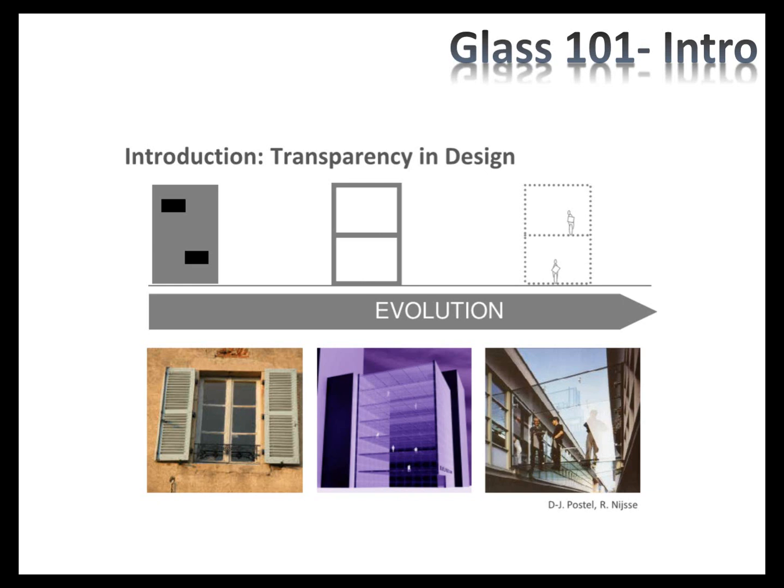There has been quite a bit of evolution in glass as a material used in buildings over many hundreds of years, from when it was used mainly in small window applications to today, where glass is used well beyond windows and can provide full transparency. There is also another evolution currently happening in regards to sustainability — whether we should have fully transparent facades, both in terms of operational energy requirements and the amount of embodied carbon that goes into creation of glass as a material.